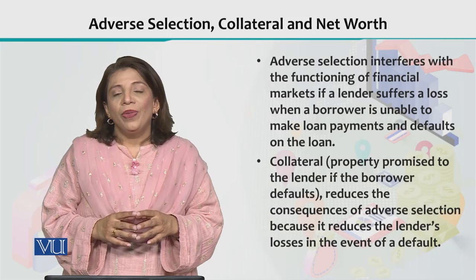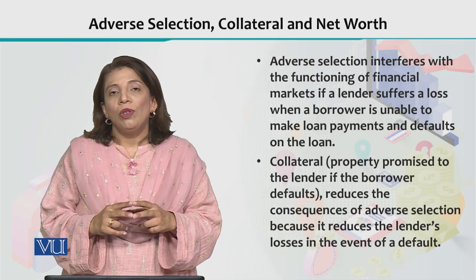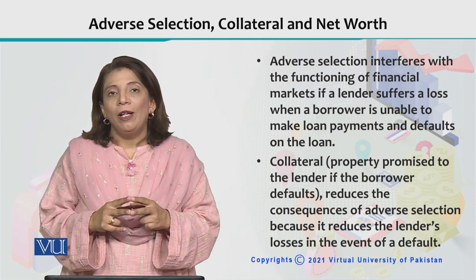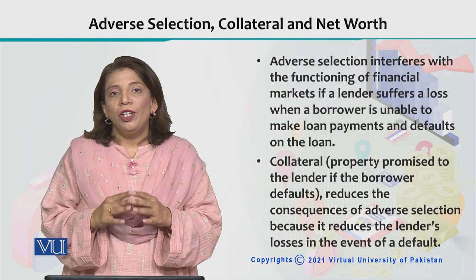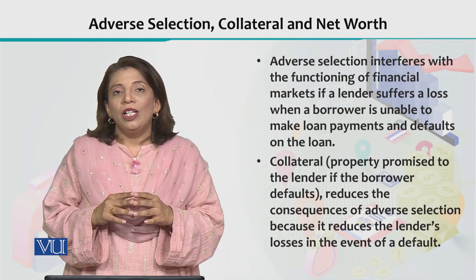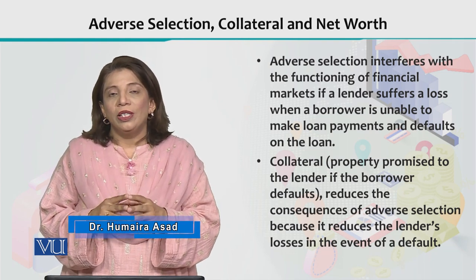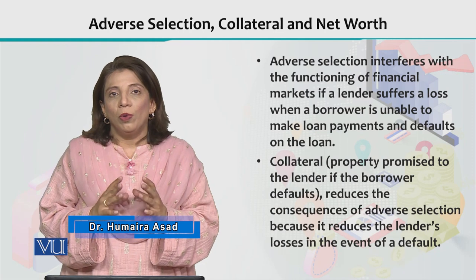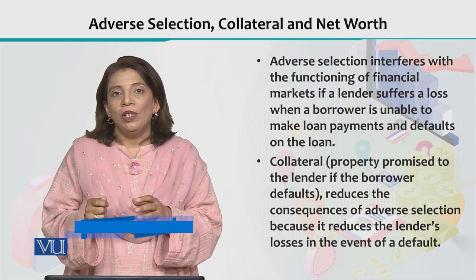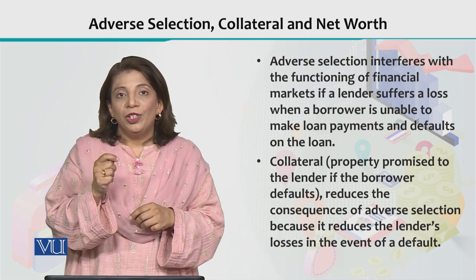In this section, I will be sharing two more concepts that can help an investor in reducing adverse selection. There is one thing called collateral. What people do is, in order to avoid adverse selection, they always make sure that when we are giving a loan, that loan should be secured.